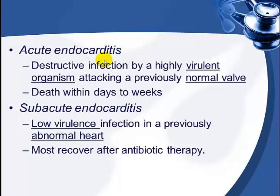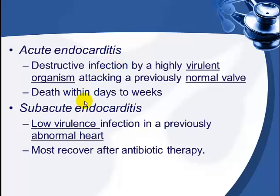Based on the severity and tempo of inflammation, infective endocarditis is divided into acute and subacute types. In acute endocarditis, a highly virulent organism infects a previously normal wall, causing a very severe disease with death within days to weeks. In subacute endocarditis, a low-virulence organism affects a previously abnormal heart wall, and most patients recover after antibiotic therapy.